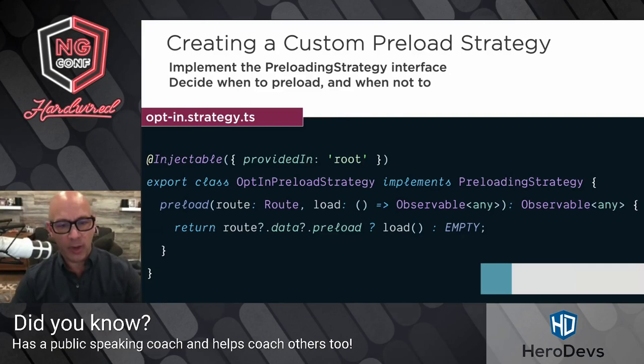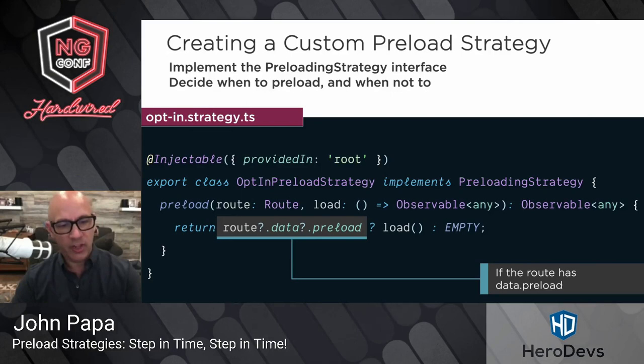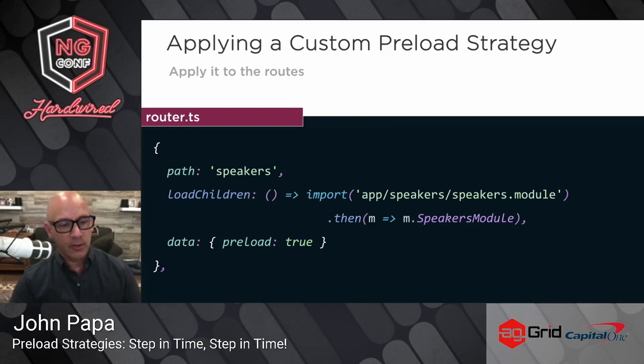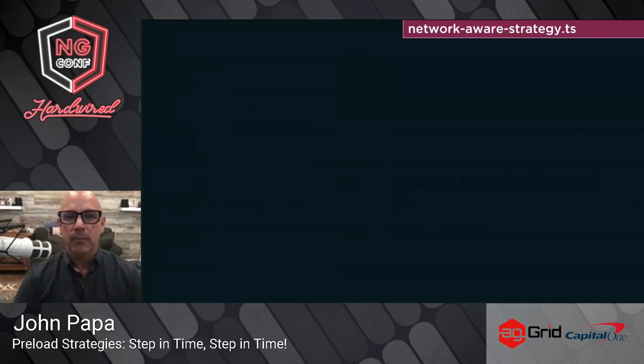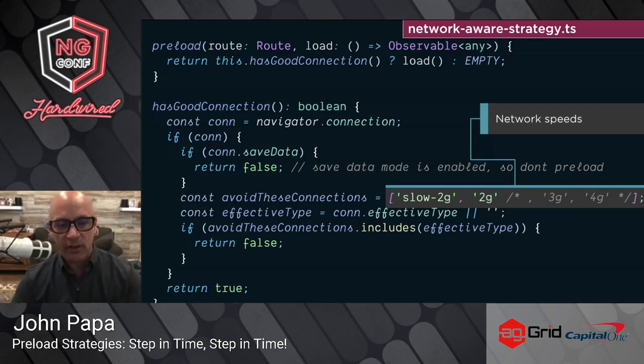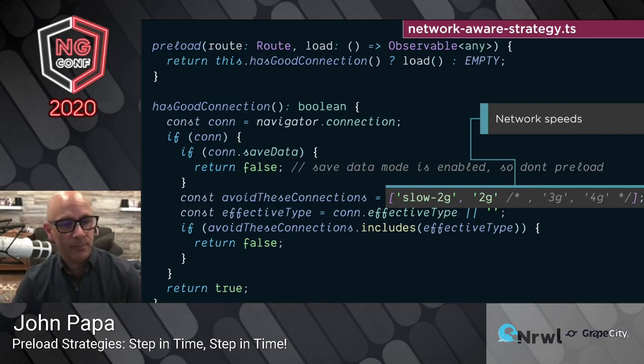And there's the opt-in strategy, where you set a flag on routes at design time to decide which ones will preload and which ones will not. Customizing a preload strategy is pretty simple: you decide when to do it or when not to, implement the interface, define your logic using the data preload property to determine if you preload, then add it via the preload option in your routes file. For the network-aware strategy, we've got the save data saver check, and then we decide which network connections to support.